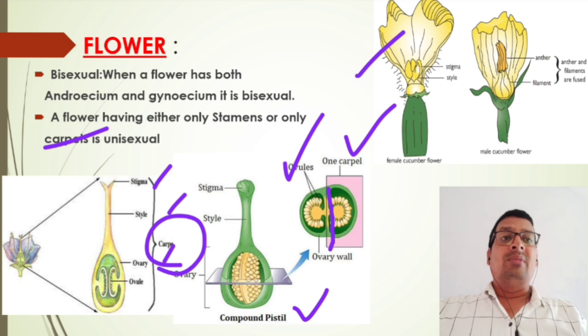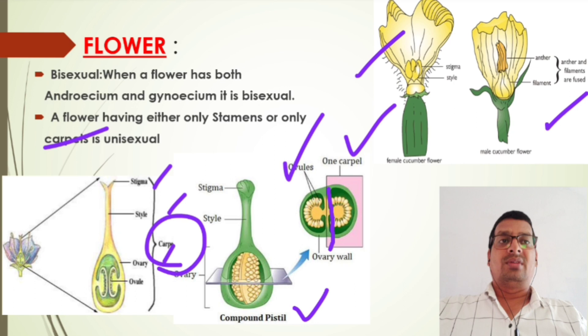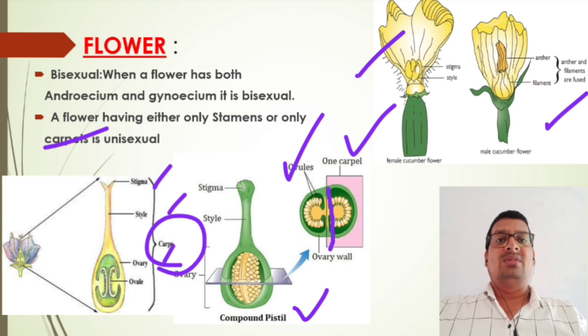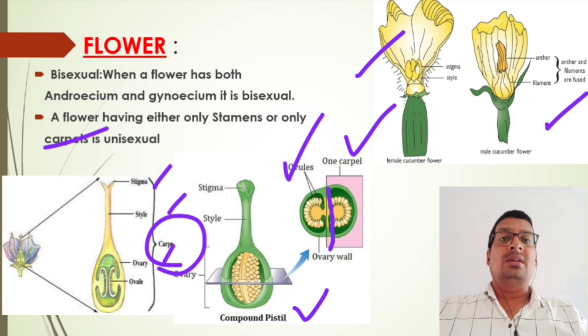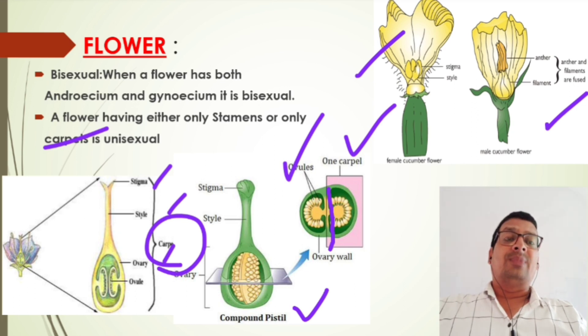This is the female cucumber flower and this is the male cucumber flower — these are unisexual, because the sex organs are present in different types of flowers.